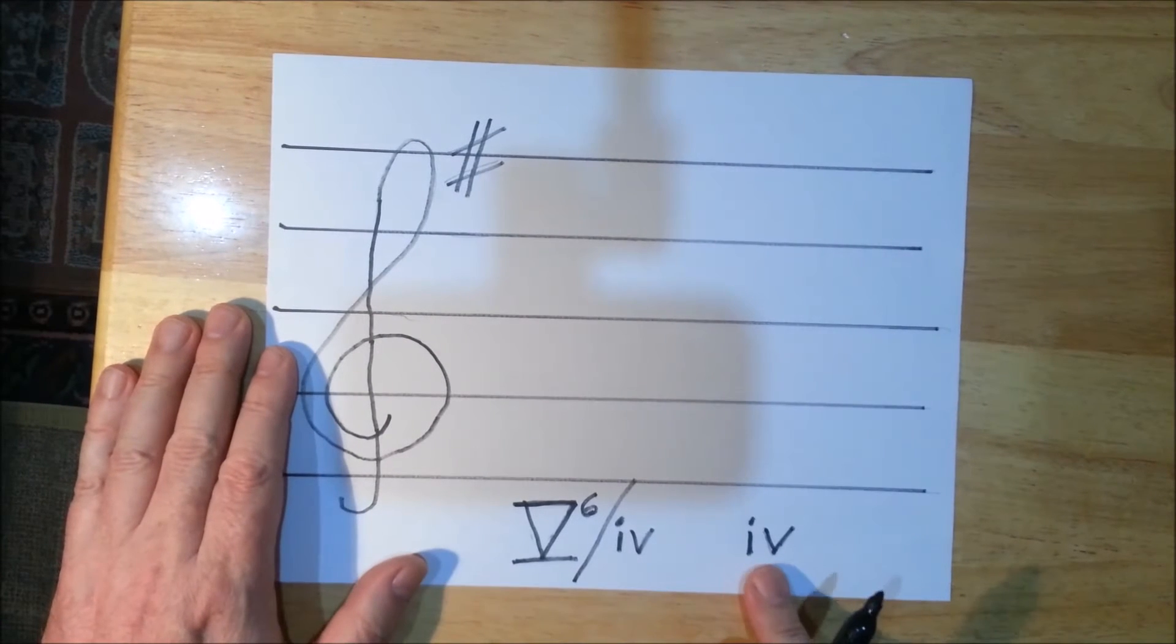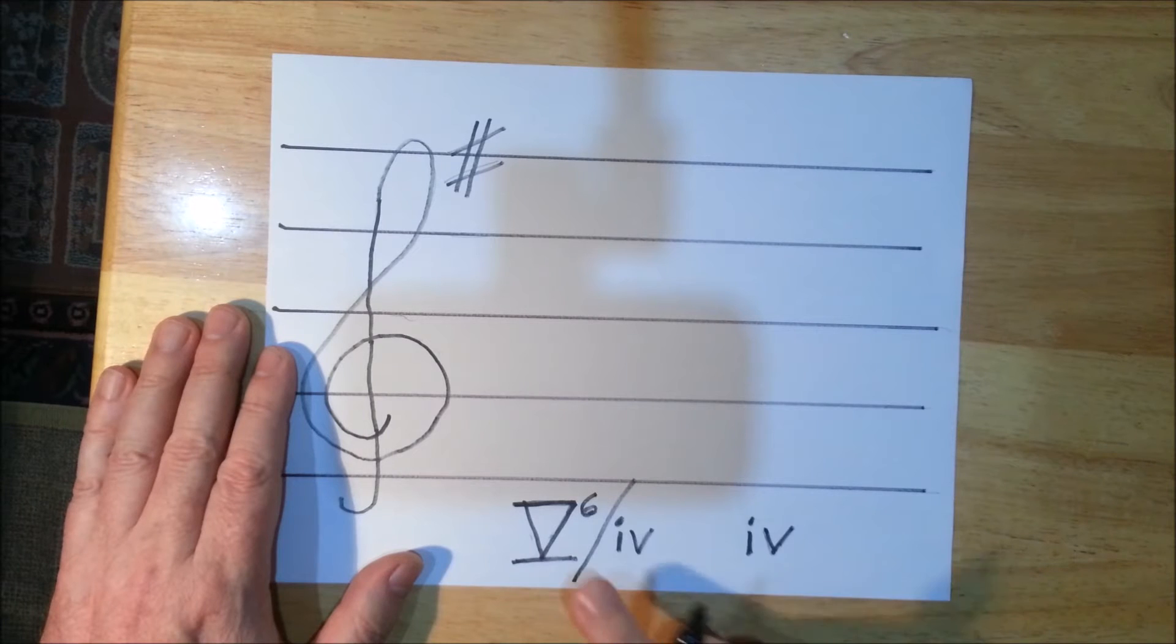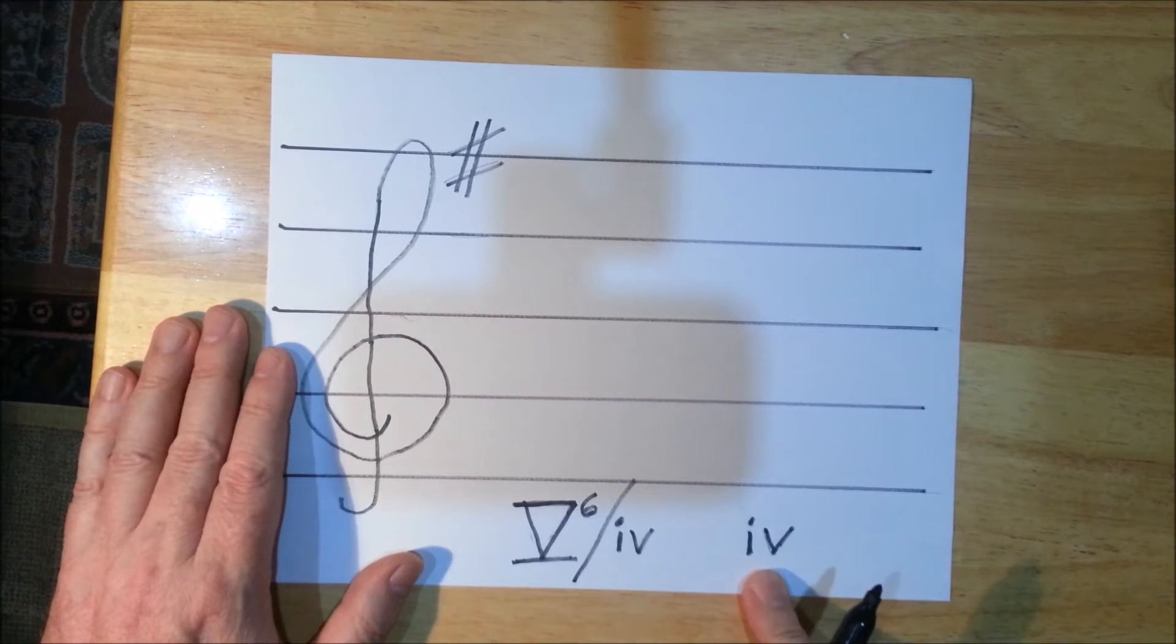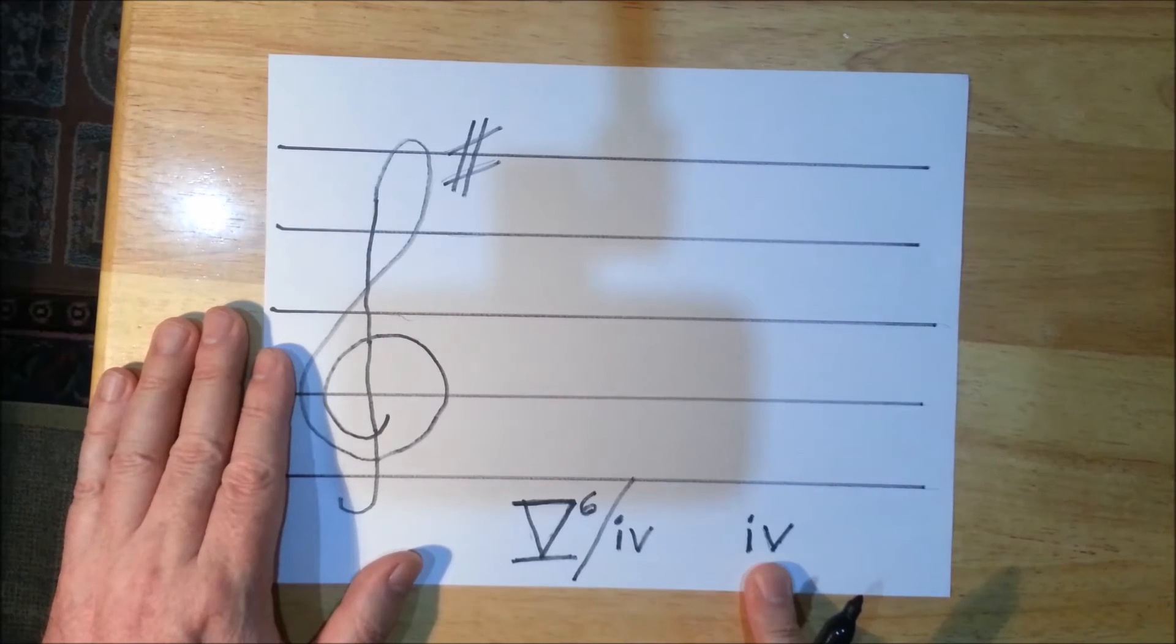So now I can go ahead and locate the four chord in E minor. With secondary dominance it's much easier to do the second chord first and then work your way back. So I'm going to do the four chord first.